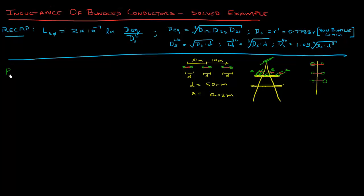Let's give what the distances are. Let's say the distance between these two and these two here is 10 meters, 10 meters. This small distance is d, d, and d. Let's say d is given as 50 centimeters, and the radius of each conductor is given to you as 0.02 meters.